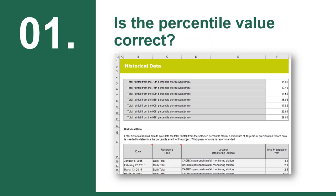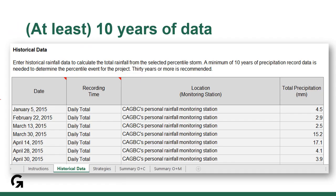When starting a review, we first determine if the right percentile of rainfall events has been calculated. There are several steps to verify this. The first thing we open up is the LEED rainfall event calculator obtained from USGBC's website, and we confirm there's at least 10 years of rainfall event data on the historical data tab.